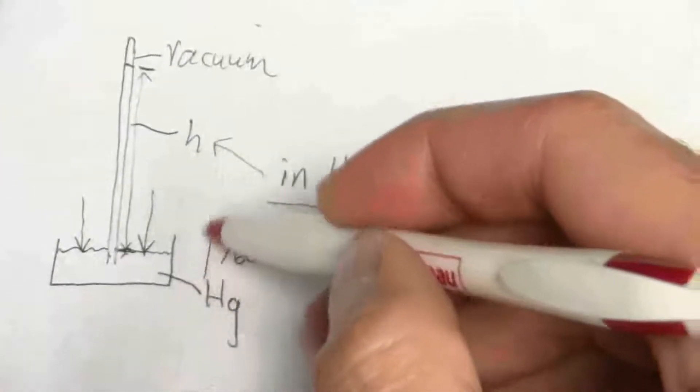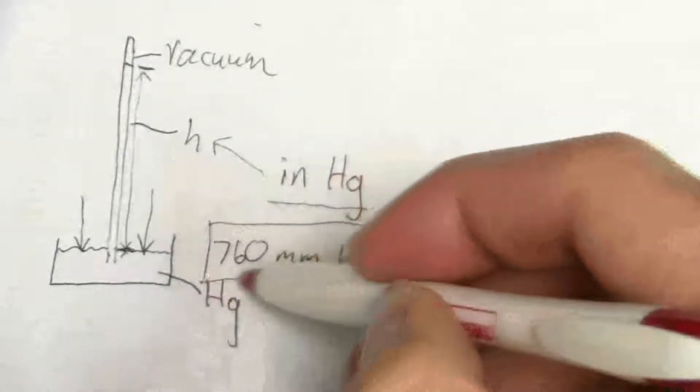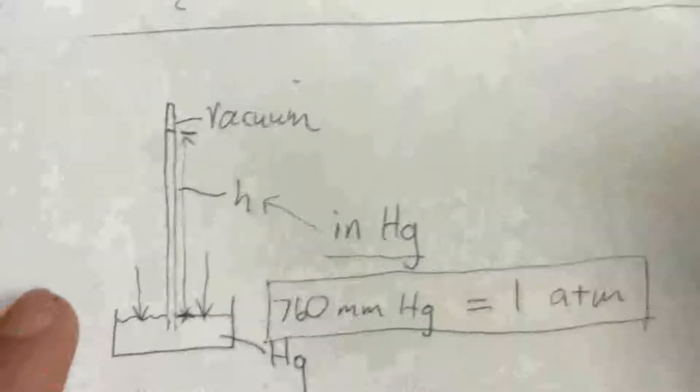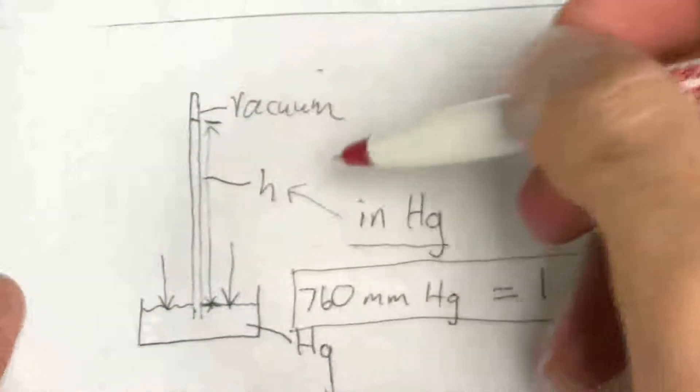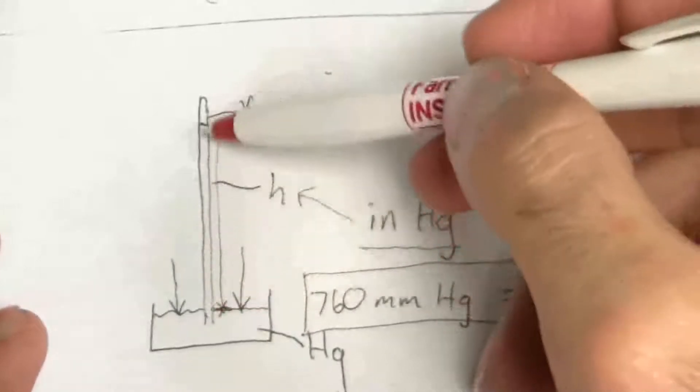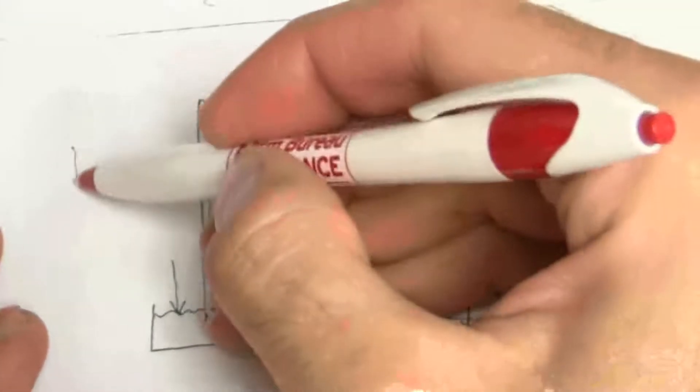So these are some common units. This is a good conversion factor to have memorized. But we also talked about pounds per square inch. You can see where that comes from, the weight of that mercury column,